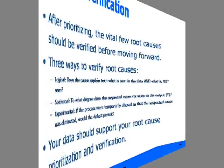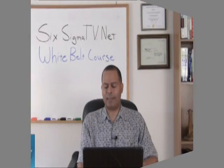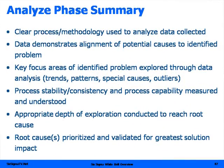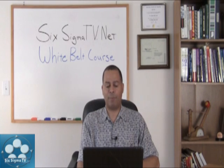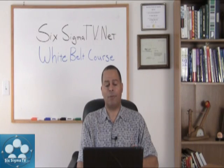We want to verify those root causes before we move on. Look at your statistical analysis, your experiments, use your master black belt, take the smell test to make sure it looks right, but validate it with your statistical and graphical analysis to make sure your data is supported and verified. In summary: use a clear process methodology to analyze your data, make sure your data aligns with your potential causes, look at patterns and special causes, check process stability and capability, and use appropriate tools to find root causes. Pull down the presentation and run through all the checklists with your project champion before moving to the improve phase, because wrong changes can be costly. Steve is going to take you through the improve phase coming up next.